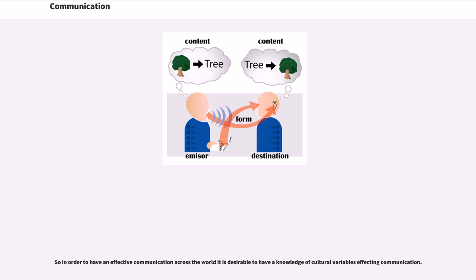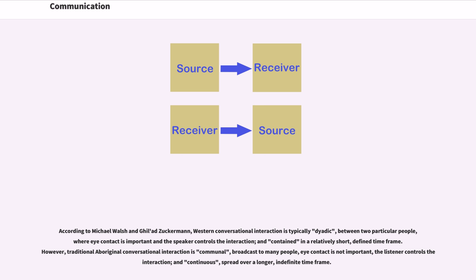According to Michael Walsh and Ghil'ad Zuckermann, Western conversational interaction is typically dyadic between two particular people, where eye contact is important and the speaker controls the interaction, and contained in a relatively short, defined time frame. However, traditional Aboriginal conversational interaction is communal, broadcast to many people, eye contact is not important, the listener controls the interaction, and it is continuous, spread over a longer, indefinite time frame.